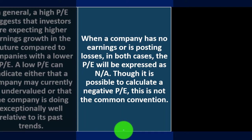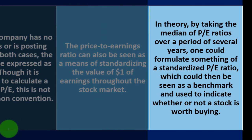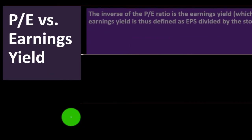When a company has no earnings or is posting losses, in both cases the PE will be expressed as N/A, though it is possible to calculate a negative PE — this is not the common convention. The price to earnings ratio can also be seen as a means of standardizing the value of one dollar of earnings throughout the stock market. By taking the median of PE ratios over several years, one could formulate a standardized PE ratio to serve as a benchmark indicating whether a stock is worth buying.